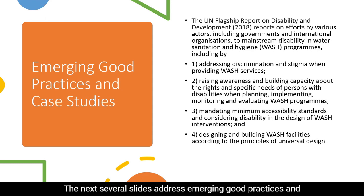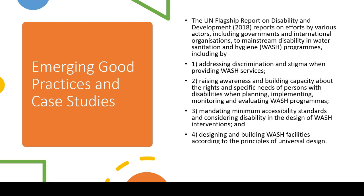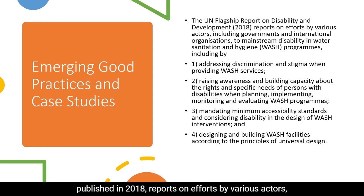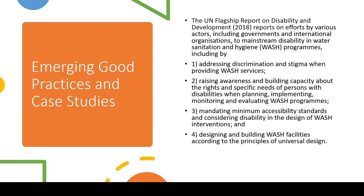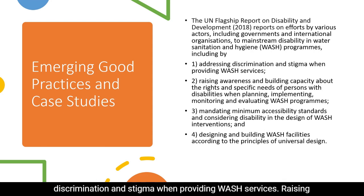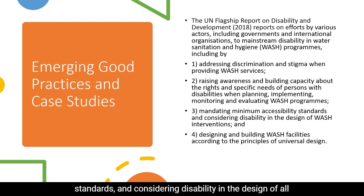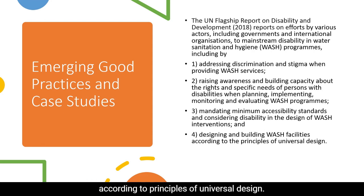The next several slides address emerging good practices and present case studies from different countries where disability-inclusive WASH is happening. The United Nations Flagship Report on disability and development published in 2018 reports on efforts by governments and international organizations to mainstream disability in water, sanitation, and hygiene programs. Suggestions include addressing discrimination and stigma when providing WASH services, raising awareness and building capacity about the rights and needs of persons with disabilities in all phases of WASH programming, mandating minimum accessibility standards, and designing and building WASH facilities according to principles of universal design.